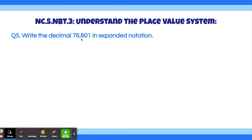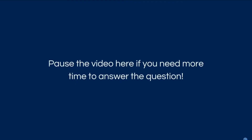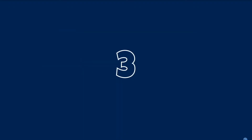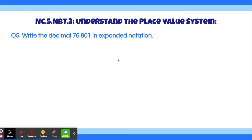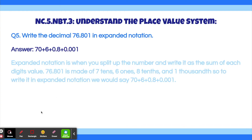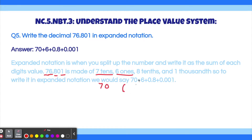Question 5. Write the decimal 76.801 in expanded notation. I'll give you guys a few seconds. The answer is 70 plus 6 plus 0.8 plus 0.001. Expanded notation is when you split up the number and write it as a sum of each digit's value. 76.801 is made up of seven tens, which is 70; six ones, which is just 6; eight tenths, which is 0.8; and one thousandth, which is 0.001. So this is our expanded notation.